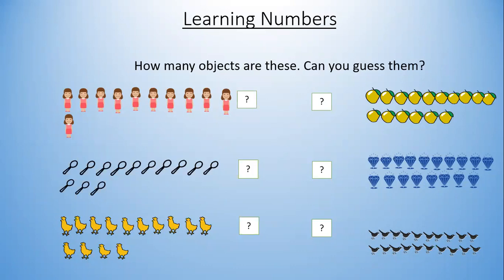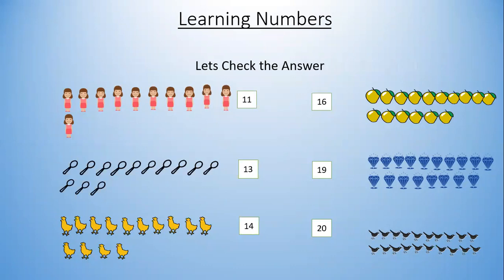Now let's check the answers. So here we have 11 dolls, 13 spoons, 14 chickens, 16 mangoes, 19 diamonds, and 20 crows.